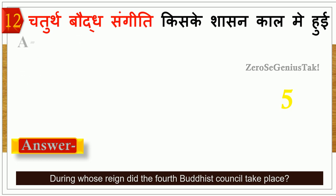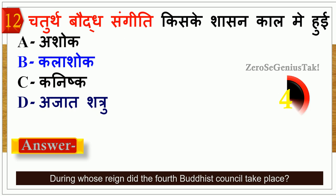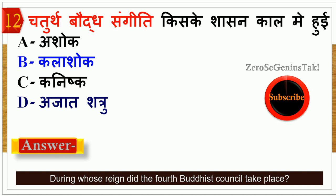Who is the first person in the world? The correct answer is option C — Kanishka.